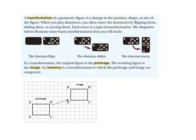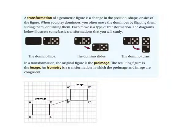A transformation of a geometric figure is a change in the position, shape, or size of the figure. When you play dominoes, you often move the dominoes by flipping them, sliding them, or turning them. Each move is a type of transformation.